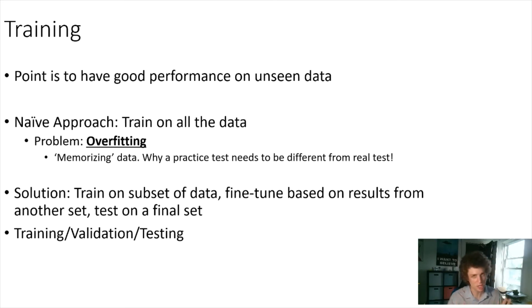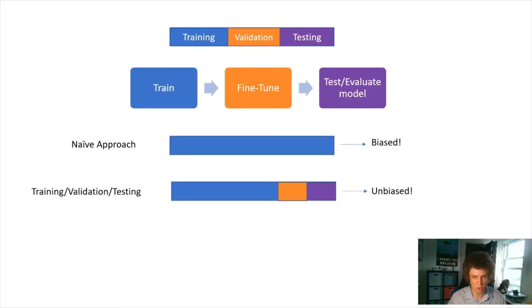You need to resist overfitting so you're able to generalize to things outside the set you're training on. The solution is they train on a smaller subset of data. They'll take 75% or 80% of the data and train on that, fine tune based on results from 10%, then test finally on another 10%. If we just train on the entire data set, that's a biased approach because we can just memorize the data.